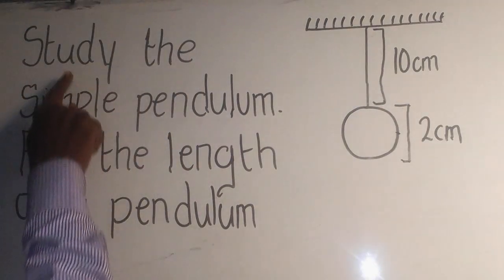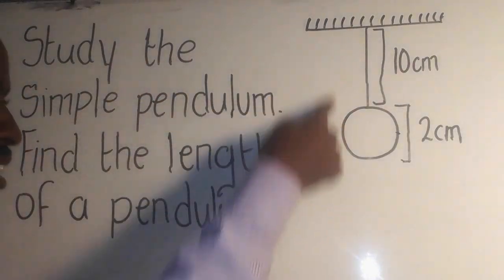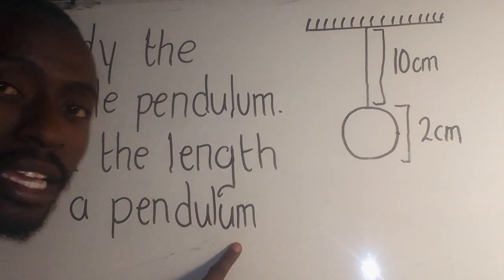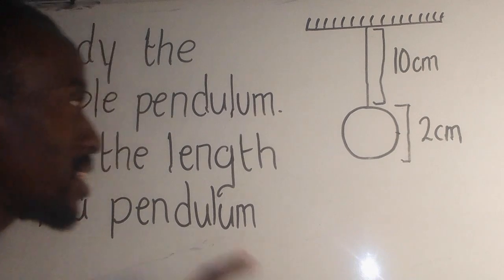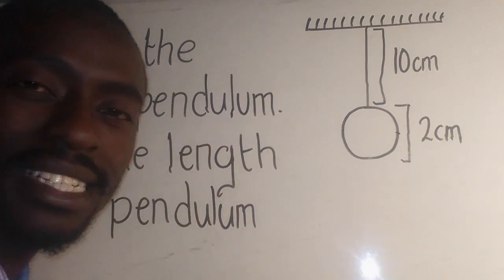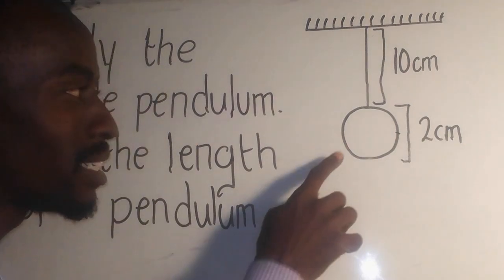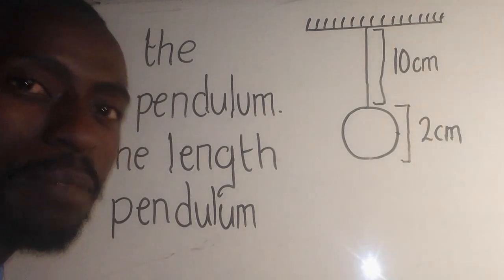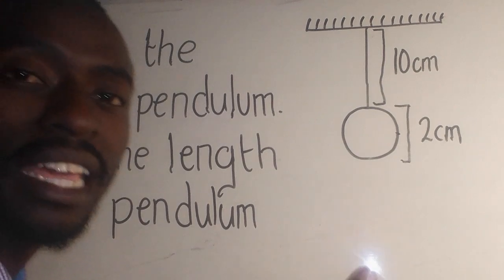A physics question says study this simple pendulum and find the length of a pendulum. You need to understand that when they say simple pendulum, this is the kind of setup which is made up of the bulb, the spring, and the support.